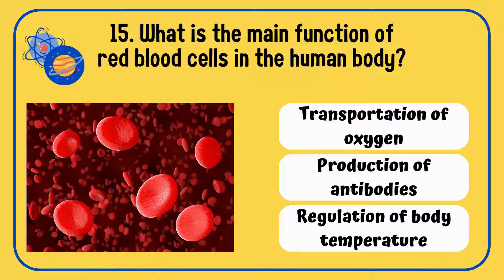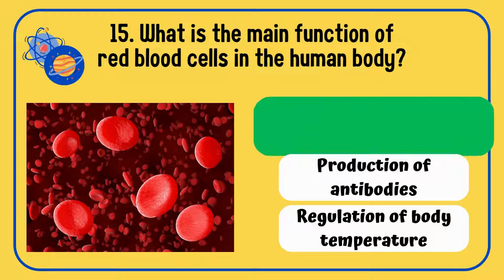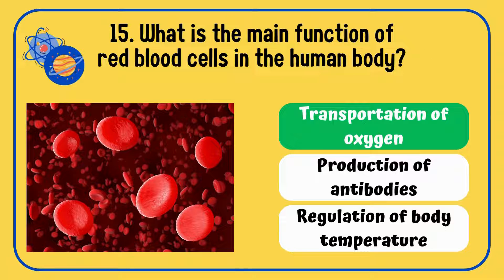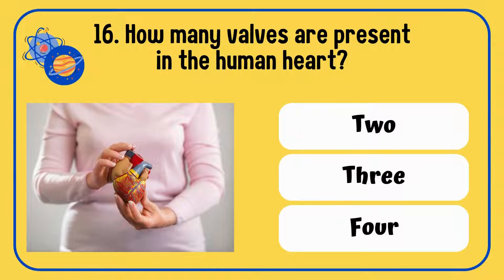What is the main function of red blood cells in the human body — transportation of oxygen, production of antibodies, or regulation of body temperature? The answer is transportation of oxygen.